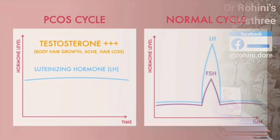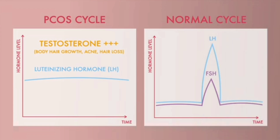But in PCOD, as I told you earlier, there is hormonal imbalance. When the levels of insulin are increased — that is hyperinsulinemia — that in turn increases the secretion of luteinizing hormone, LH. So throughout the cycle, there is a sustained increase in LH levels in patients with PCOD. There is no LH surge, and when there is no LH surge, the egg does not get released.